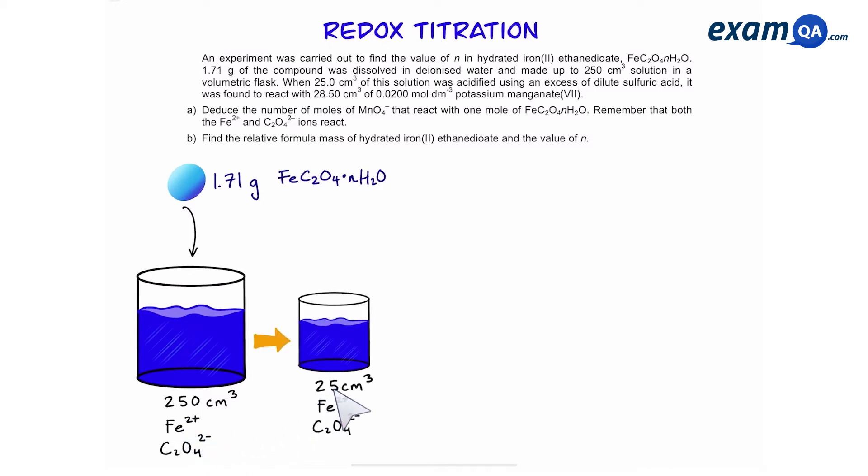Then a 25 cm³ sample is taken, it is titrated with manganate and we use 28.5 cm³ of manganate with a concentration of 0.02 mol per dm³.